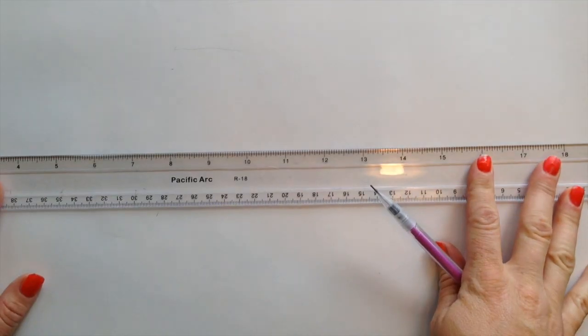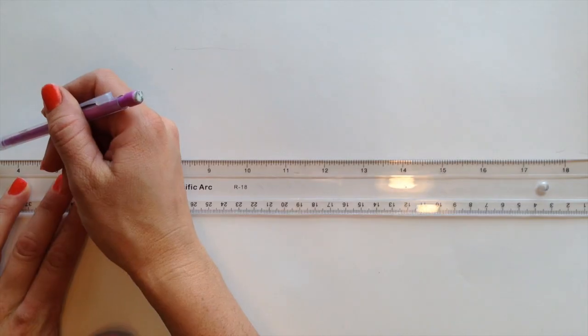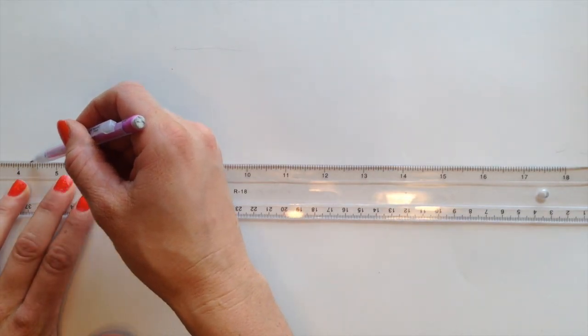First thing we're going to do is we're going to draw a horizon line across the middle of our paper. The horizon line is where the sky meets the land.